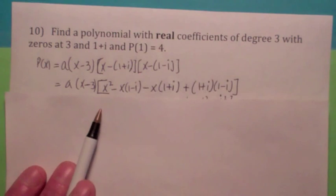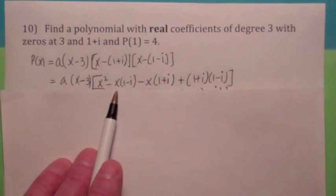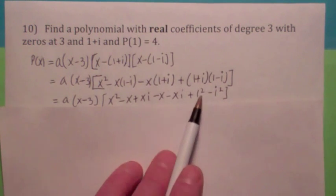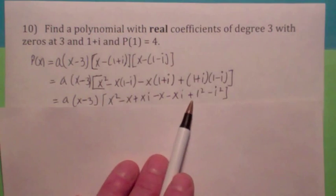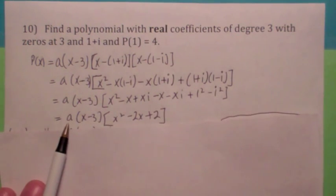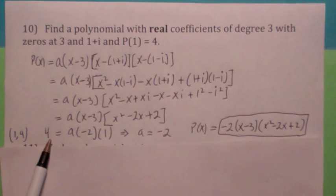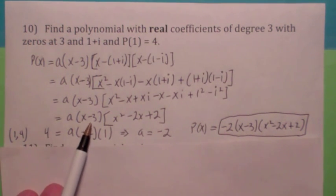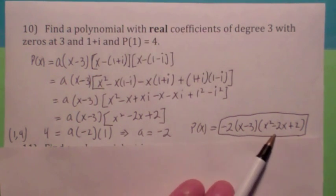So you could factor it as a times x minus 3, times x minus (1 plus i), times x minus (1 minus i). When you multiply it out carefully, you notice the last term — you have the difference of two squares, 1 minus i squared, which is going to be 2 — and the xi terms cancel. Now, the way you find a is you use the fact that p of 1 is 4. You set y equal to 4 and plug in 1 for x, and you end up with a equal to negative 2. So, this is your final answer.